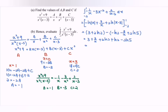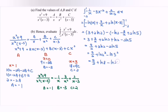Rewrite: 3 plus 3 over 2 gives 9 over 2. Plus 3 ln 2 minus 2 ln 5. Simplify further: 9 over 2, plus ln 2 to the power of 3 minus ln 5 to the power of 2. That is 9 over 2 plus ln 8 minus ln 25, which gives 9 over 2 plus ln(8 over 25). Or we can write this as approximately 3.36.